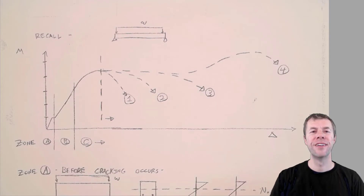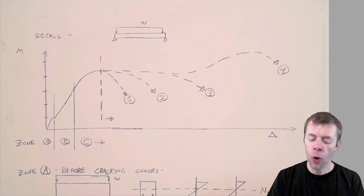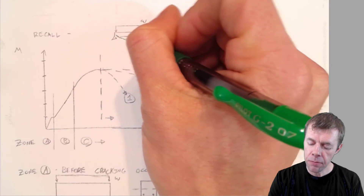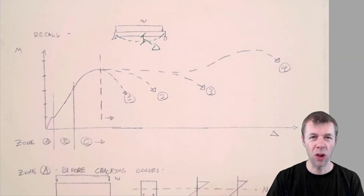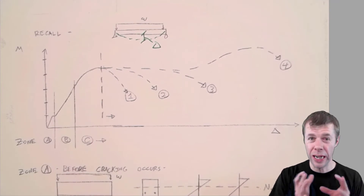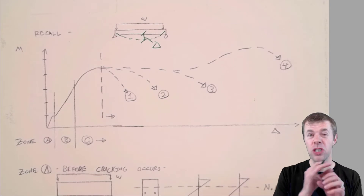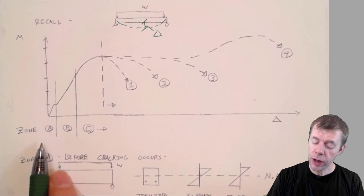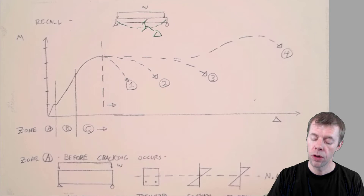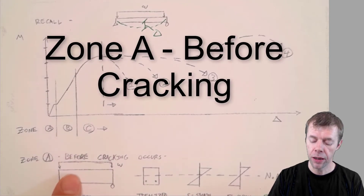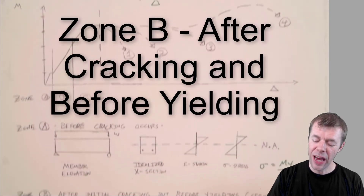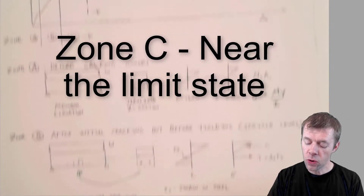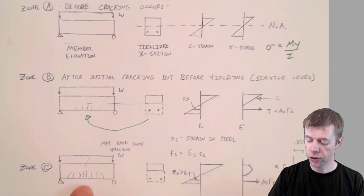Three, two, one. In this graph, I'm showing the moment versus deflection for a beam under distributed load. Everything I'm about to talk about works for pretty much any loading, but let's focus on something simple — a simply supported beam with distributed load. In this graph, we can break the behavior up into three zones: Zone A, which happens before cracking; Zone B, which happens after initial cracking but before yielding; and Zone C, which is near the limit state of the structure.